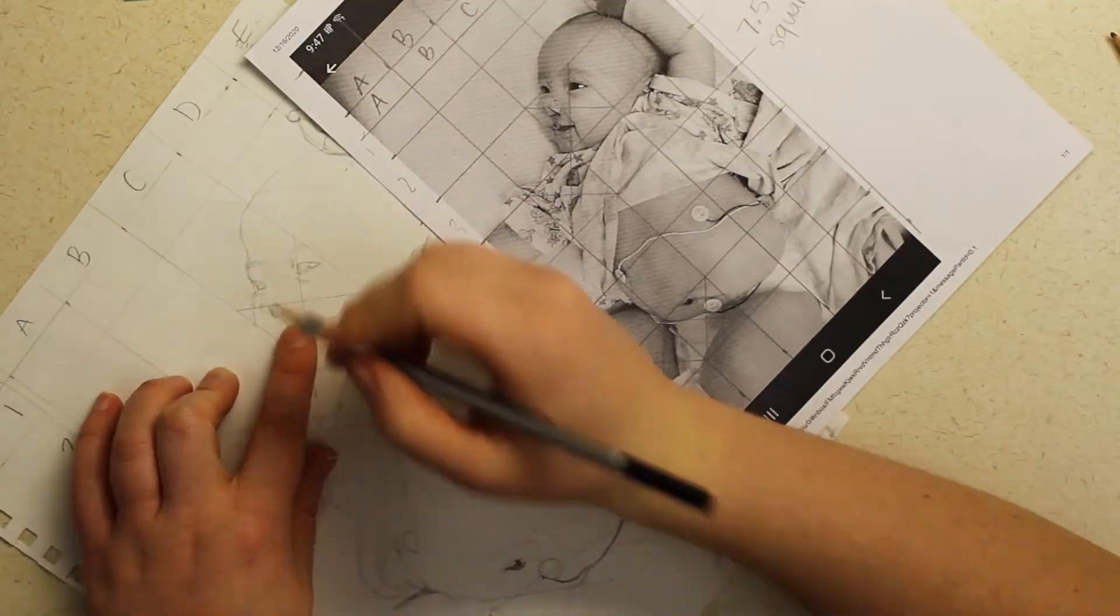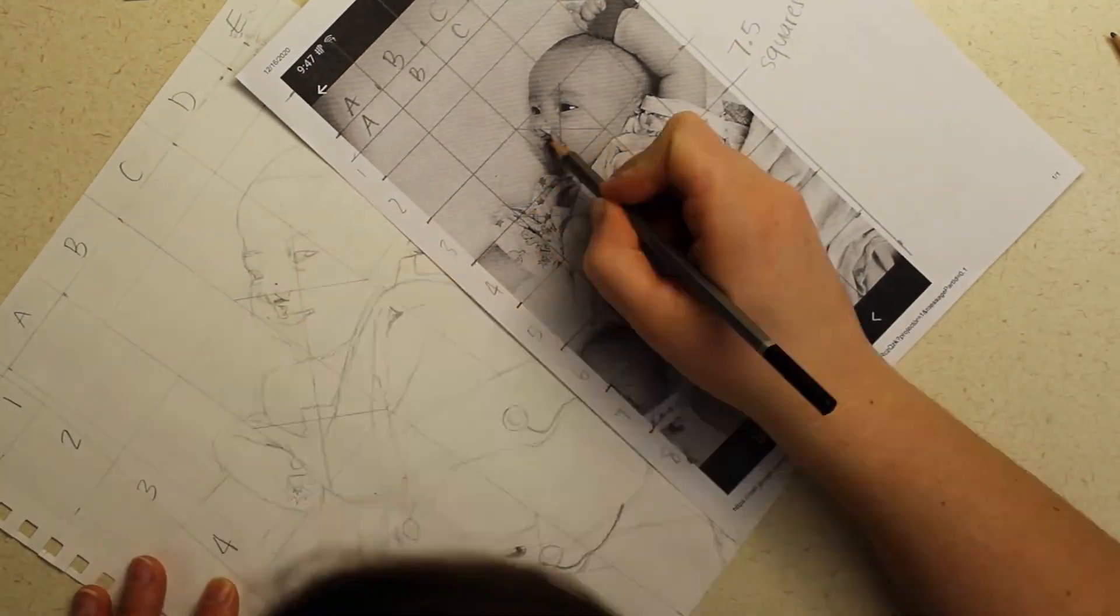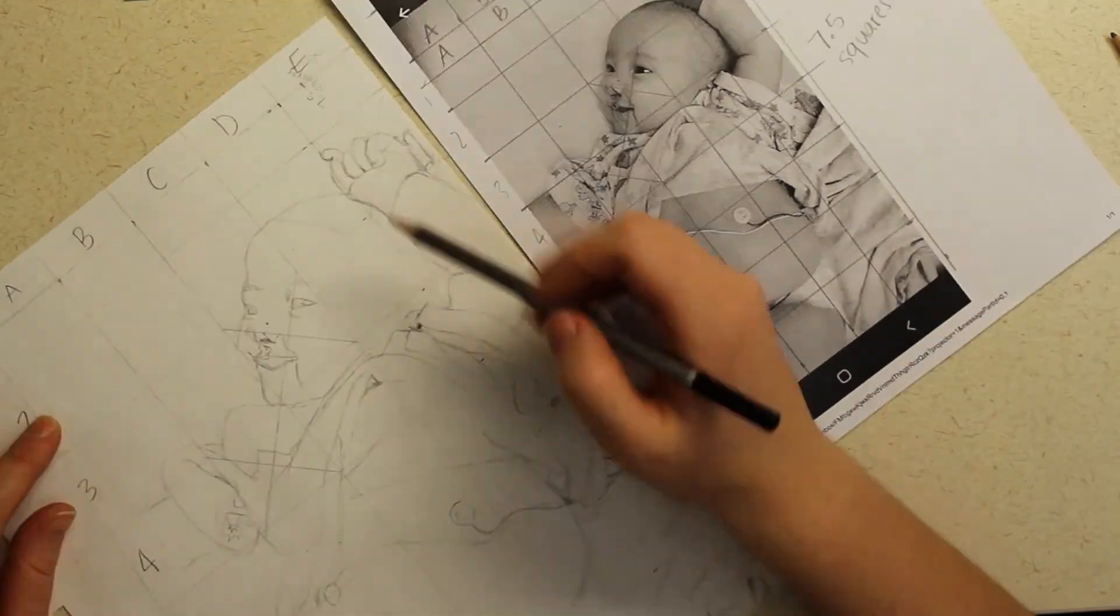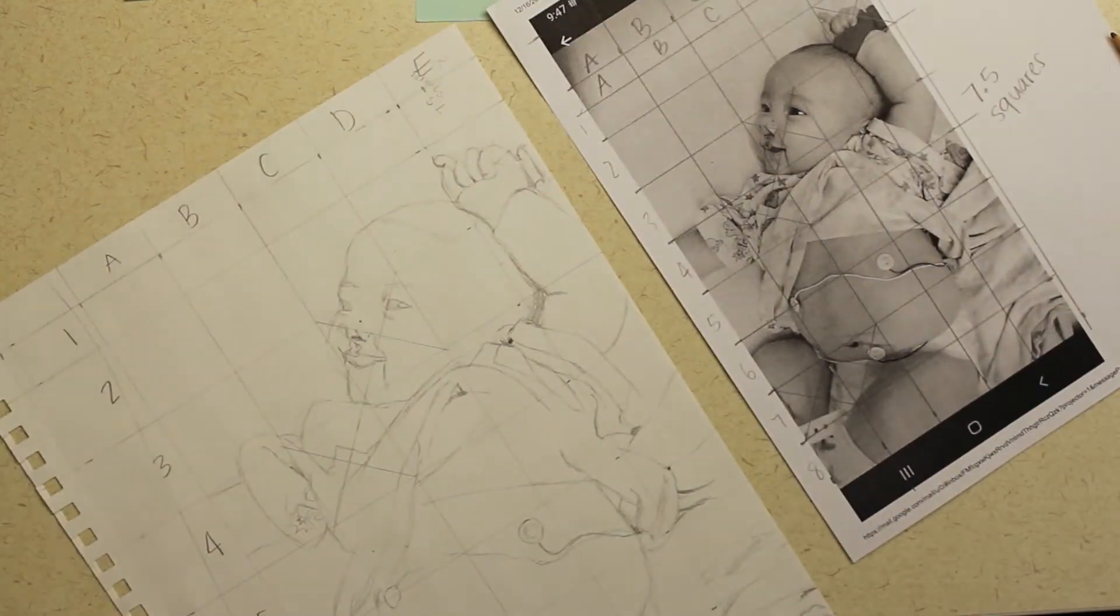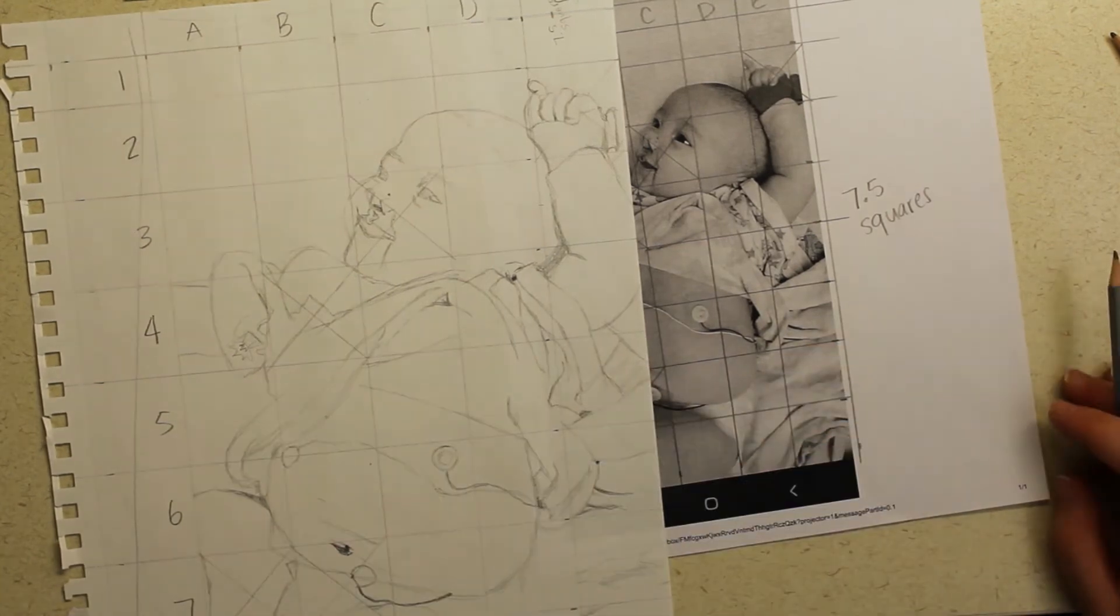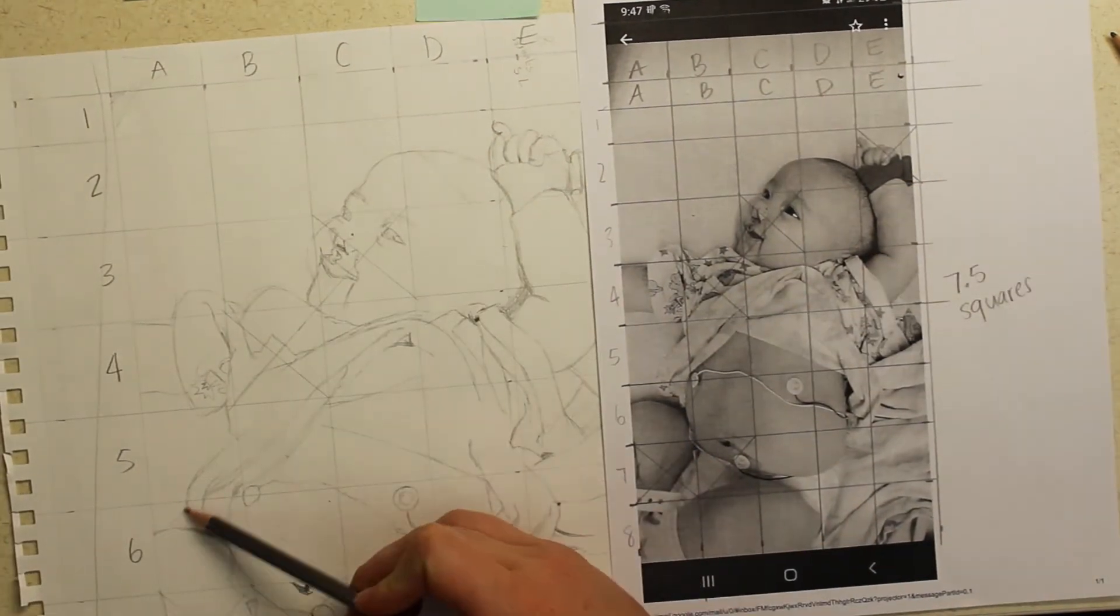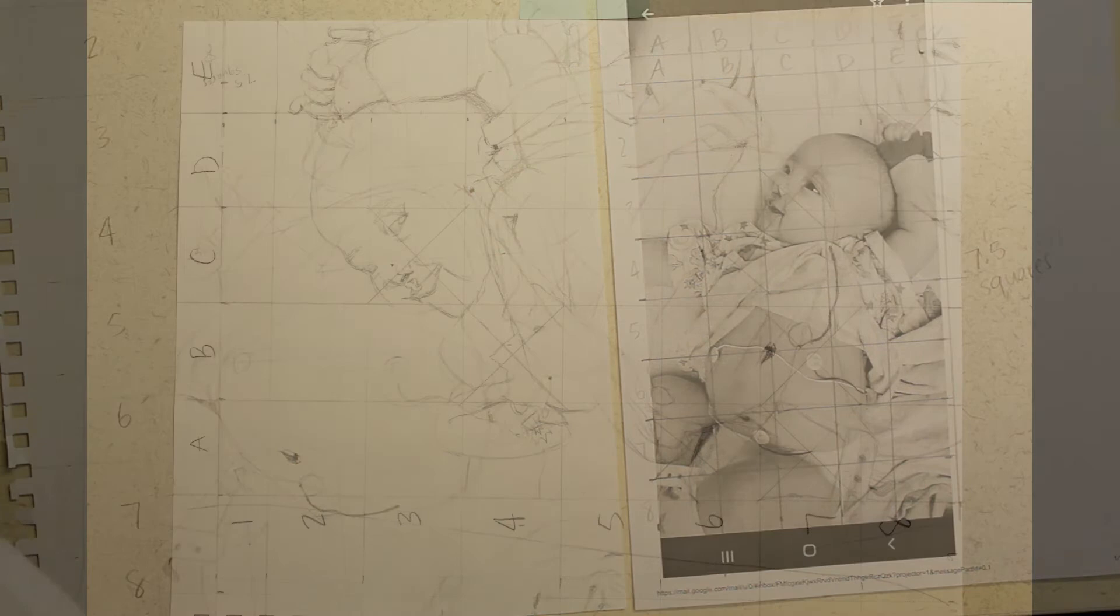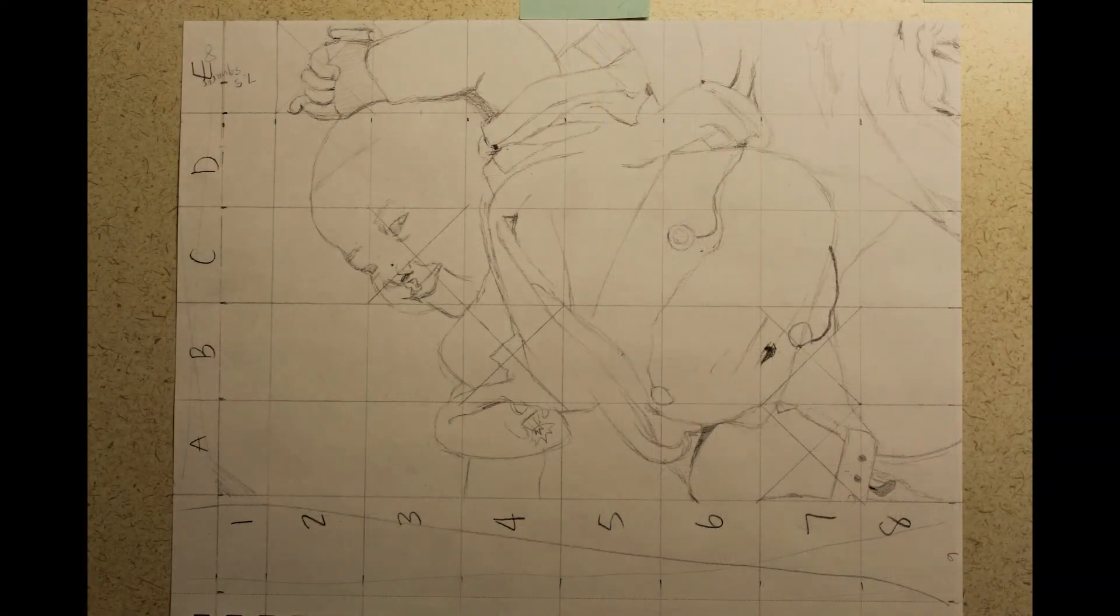You just want to keep going until all of the boxes match what you have in the reference photo. Here is my finished line drawing. It is all ready now for me to move on to shading.